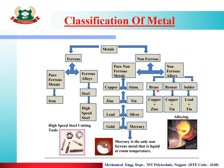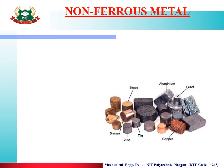Brass is copper and zinc. Bronze is copper and tin. Solder is lead and tin. These are the non-ferrous alloys. In non-ferrous metals, pure metals include lead, aluminium, copper, tin, and zinc. Brass and bronze are alloys.